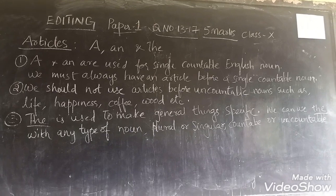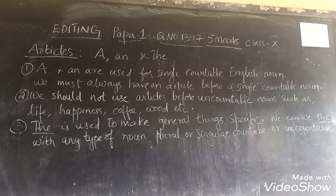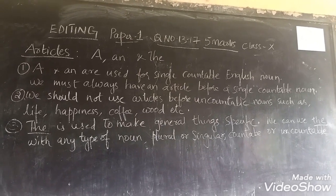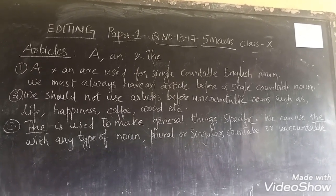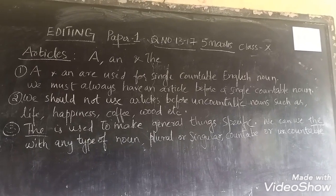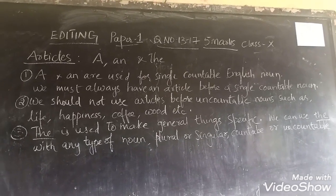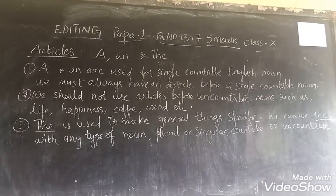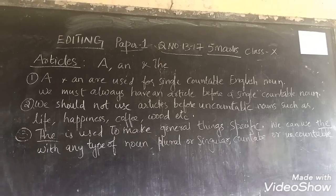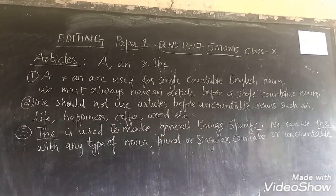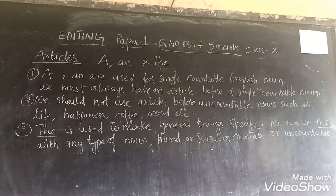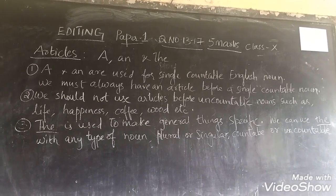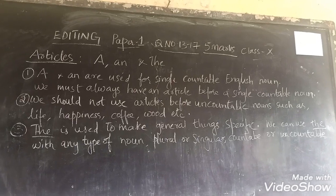Let's see where 'the' is used. 'The' is used to make general things specific, and we can use 'the' with any type of noun — plural or singular, countable or uncountable. The names of mountain ranges, the names of oceans, the names of rivers all carry 'the' before them: the Ganges, the Krishna, the Godavari, the Himalayas, the Pacific Ocean, the Indian Ocean.